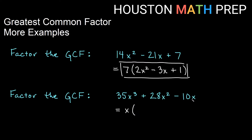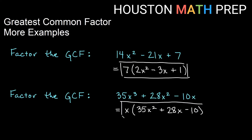Pulling out one copy of x from each term: x times what gives me 35x cubed? That's 35x squared. x times what gives me 28x squared? That's plus 28x. And x times what gives me negative 10x? That's negative 10. So we get x times the quantity 35x squared plus 28x minus 10.